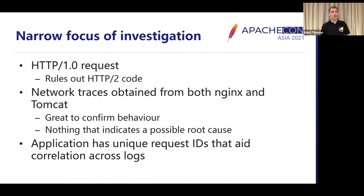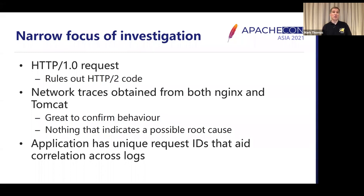We could also see that the requests were HTTP 1.0 requests. What that meant is we can rule out the HTTP/2 code, which is a reasonable chunk of code. We can also rule out anything related to HTTP 1.1 keep-alive. That helps us focus where things might be going wrong. And although in some ways it makes it more difficult, because the HTTP 1.0 request processing path is one of the simplest, so it's really odd for that to be going wrong.